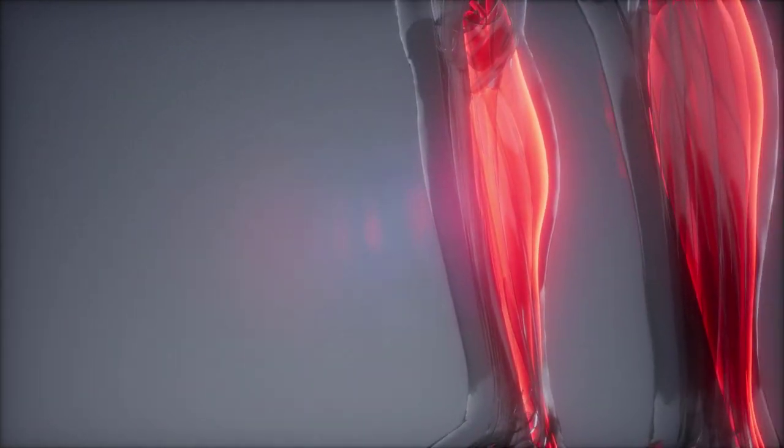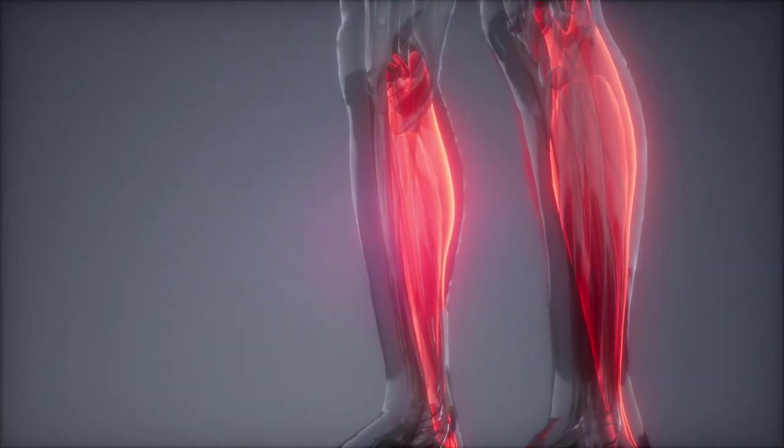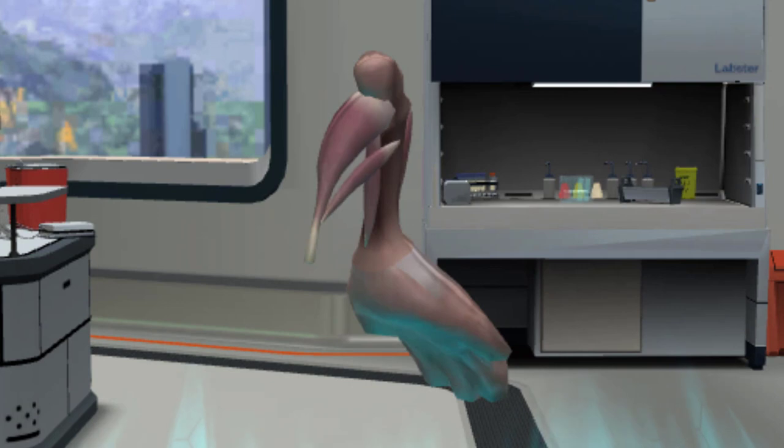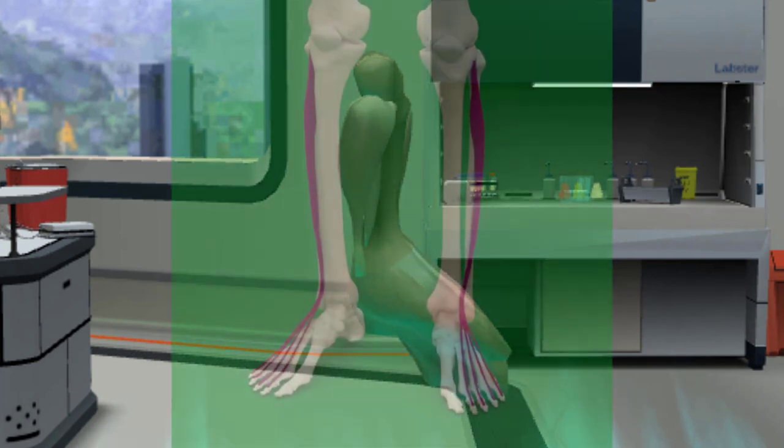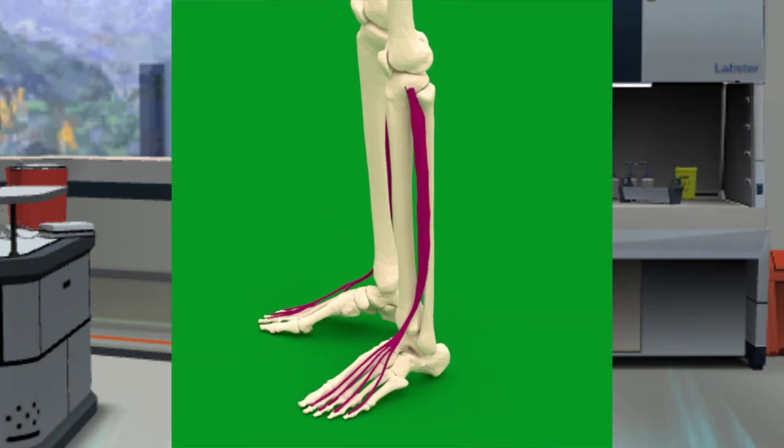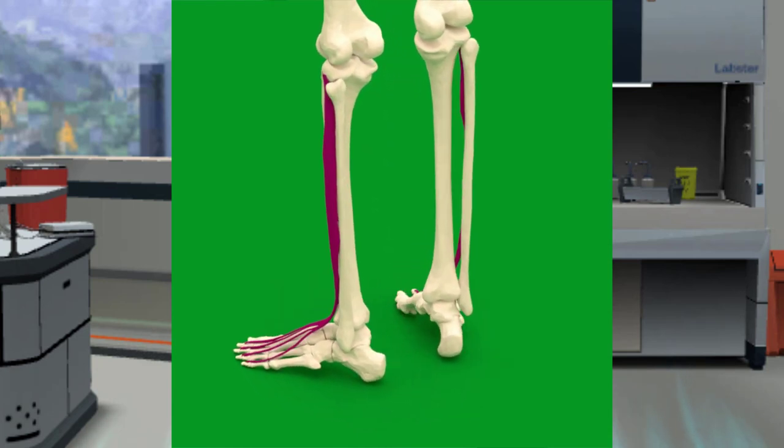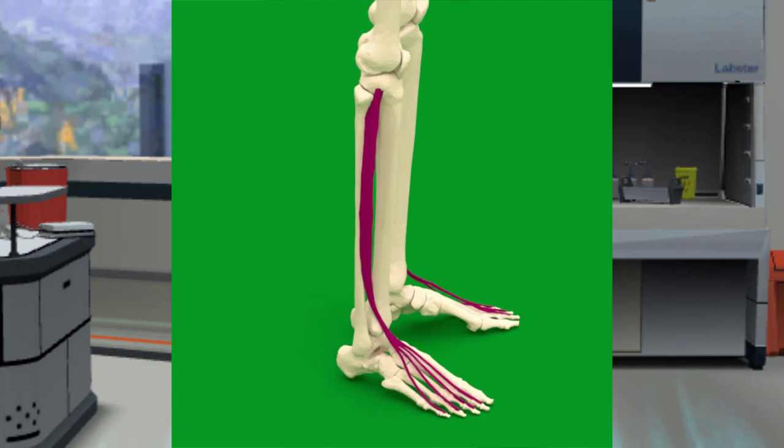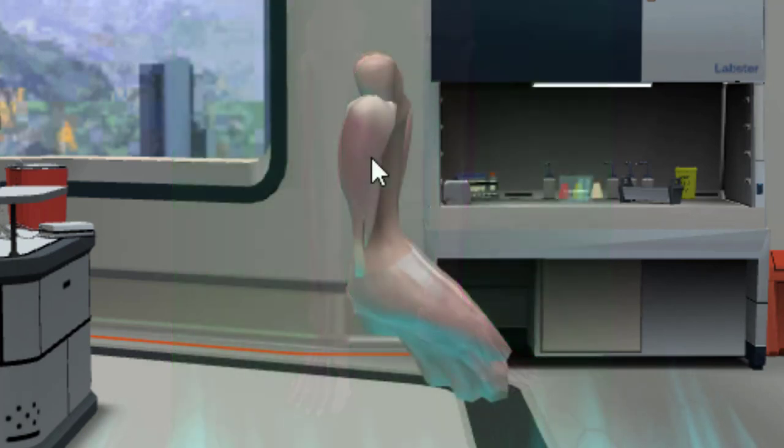First, you'll dissect the soleus, a muscle located at the back of the leg, and part of the commonly called calf muscle. You use the soleus for maintaining posture. Click on the rat leg to remove the soleus muscle. The other muscle is called the EDL, or extensor digitorum longus, and is located at the front of the leg. This is a common muscle to study because of its ideal geometry. Click on the leg to dissect out the EDL.